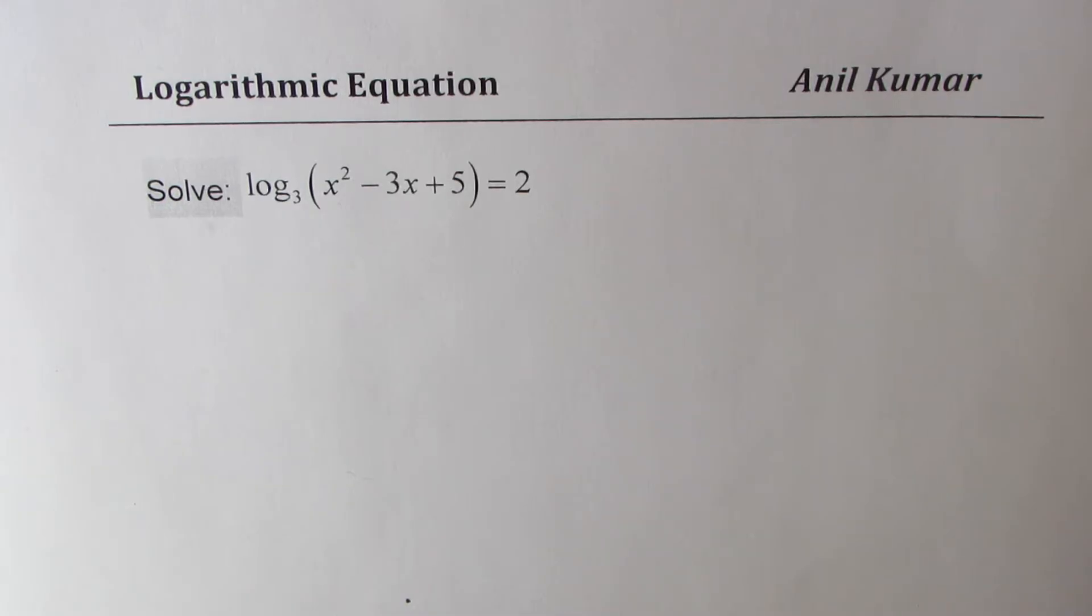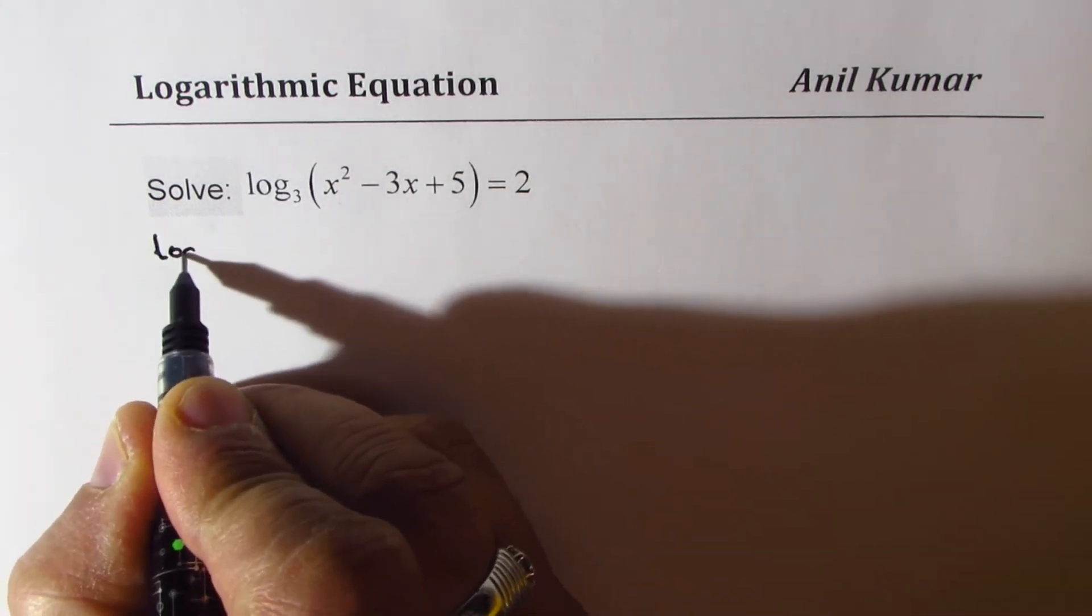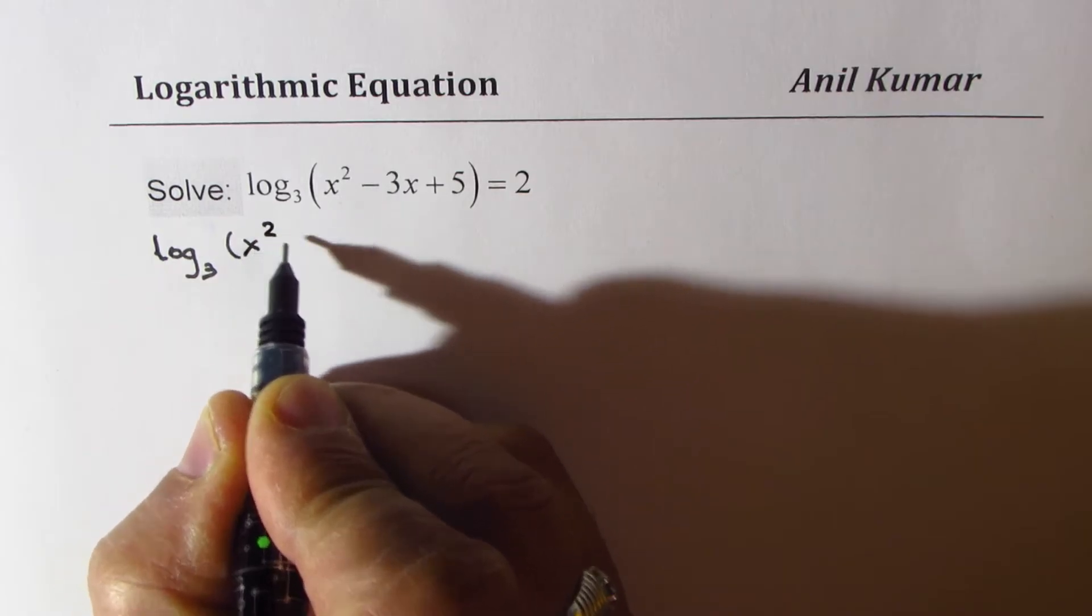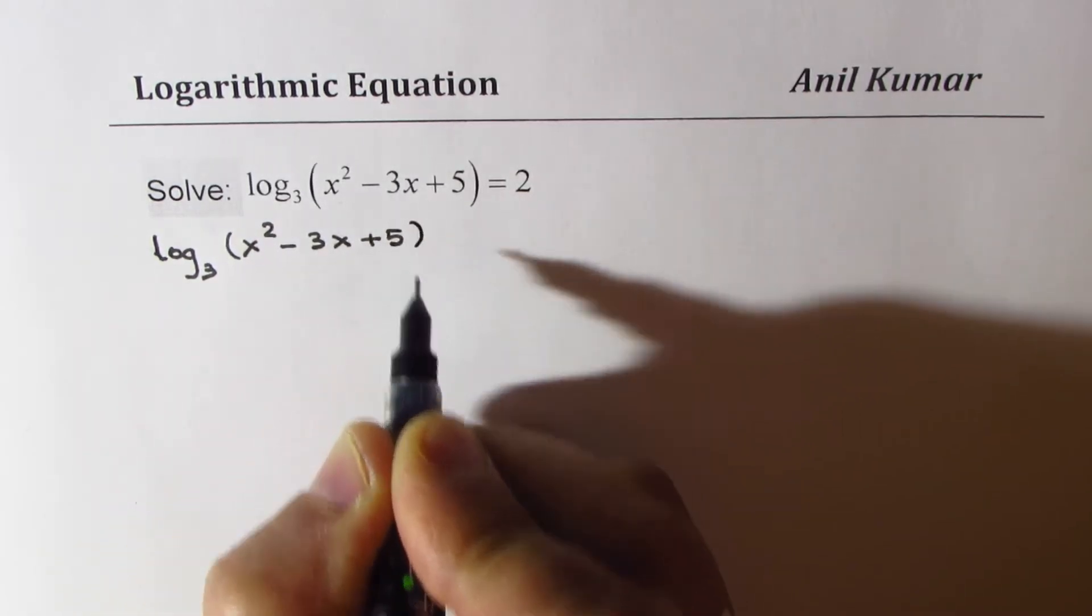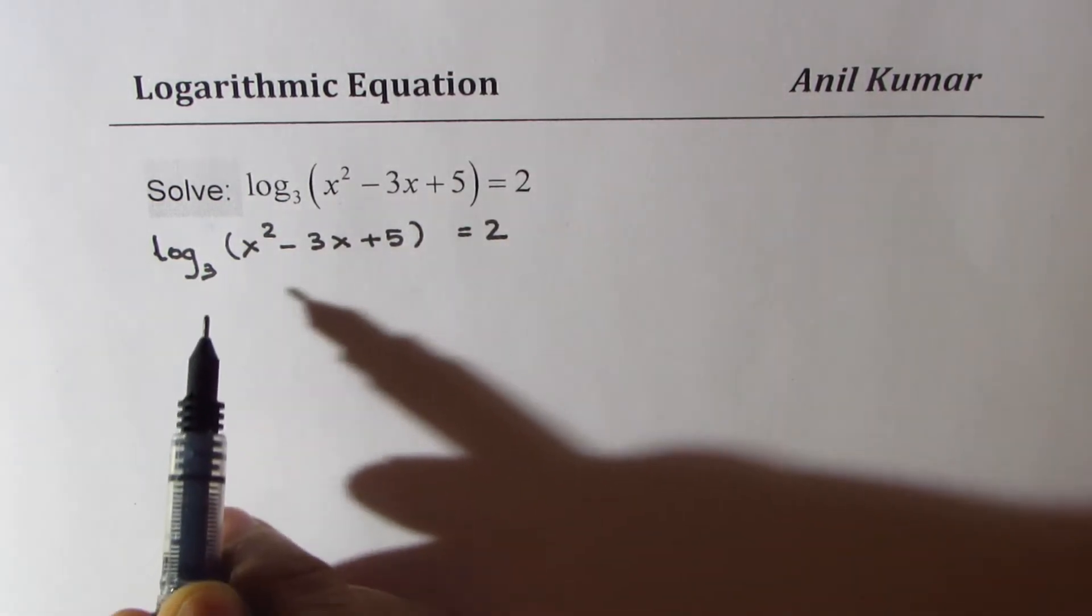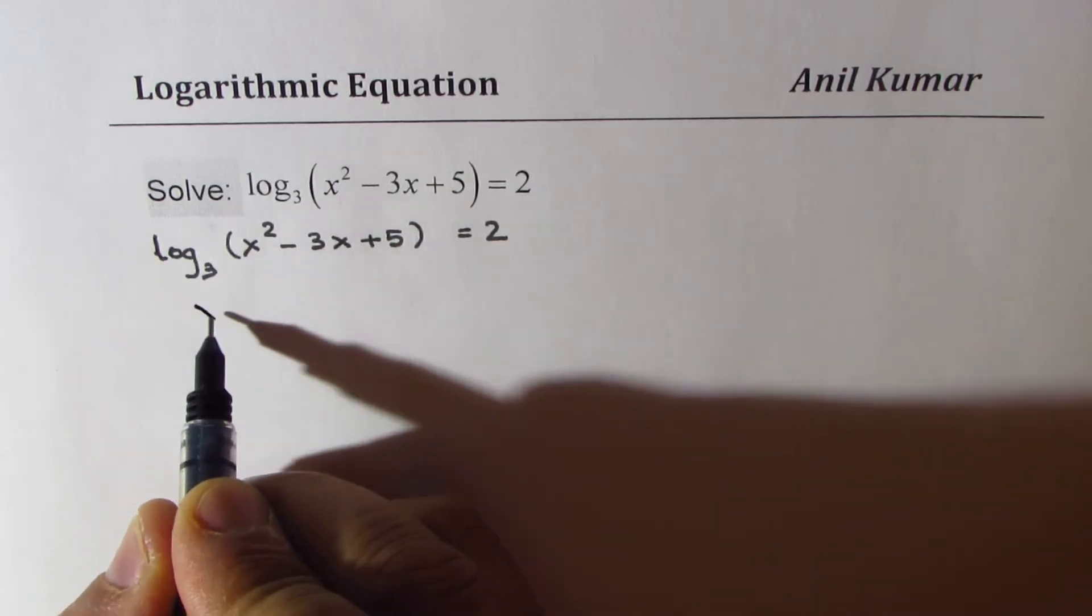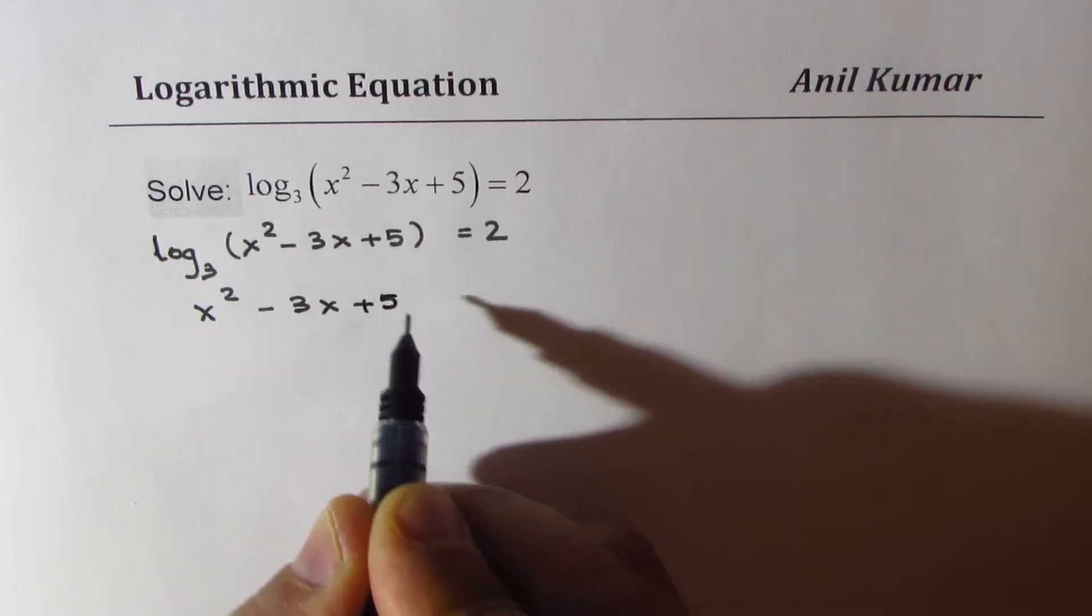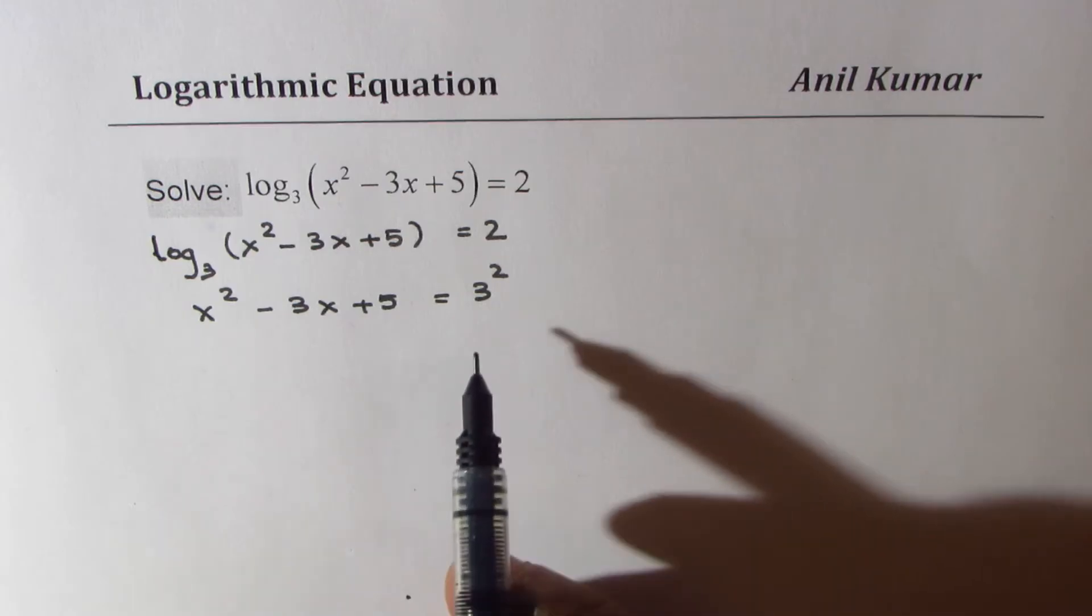Let's rewrite the equation which is log₃(x² - 3x + 5) = 2. Now first step is to convert it to exponential form, so we could write this as x² - 3x + 5 = 3².